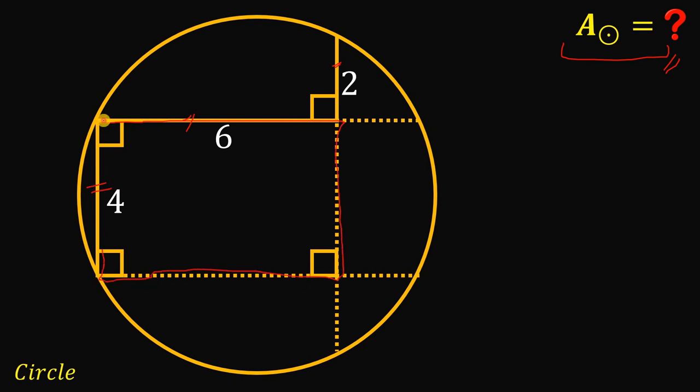So, we know a rectangle's opposite sides must be equal. So, if this side is 4, the other side is also equal to 4, like this. And if this is 6, the other side must be also equal to 6.